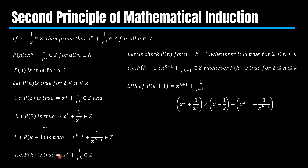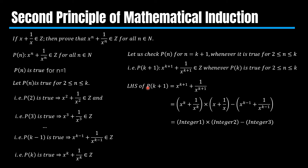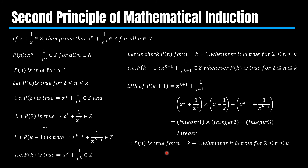As per our assumption, the sum of x^k and its reciprocal is an integer, and the sum of x^(k−1) and its reciprocal is also an integer. It is given in the question that x + 1/x is also an integer. So finally, after performing multiplication and subtraction, we will get P(k+1) equals an integer. This implies P(n) is true for n equals k+1 whenever it is true for n greater than or equal to 2 and less than or equal to k.